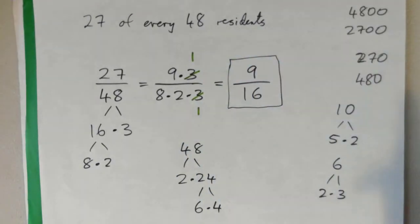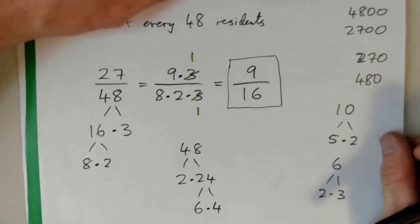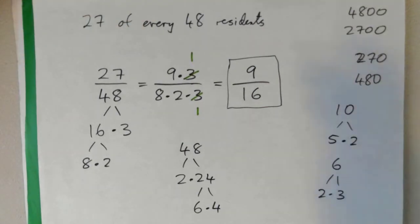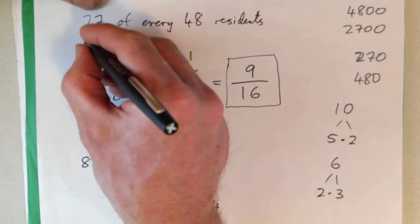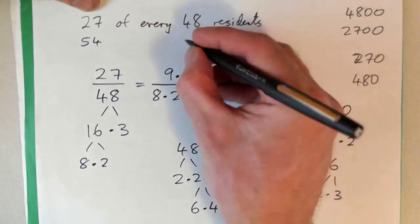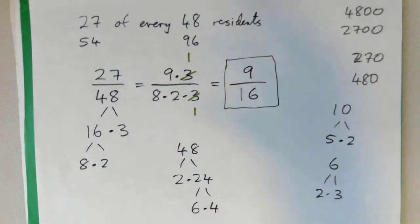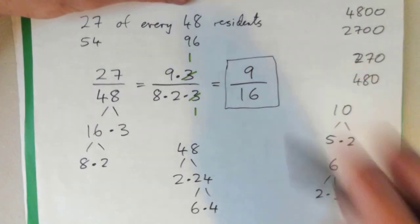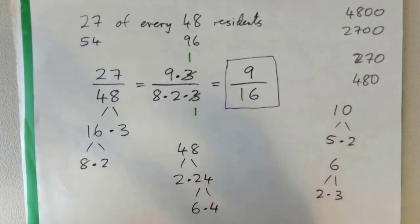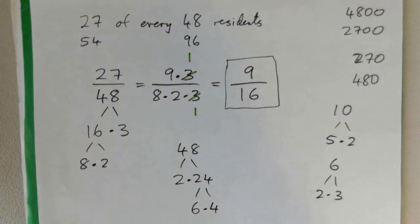That'll be the simplest way to say that sentence. A more complicated way would be to say for every 96 residents, 54 are male. That's making it more, but the simplest way is for every 16 residents, 9 are male, because that's as far as you can break that down, basically.